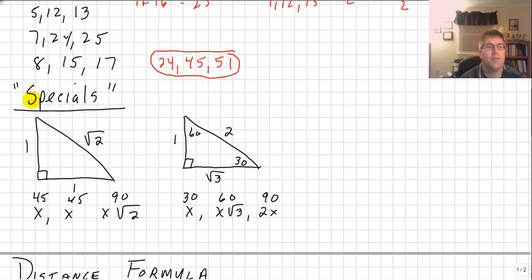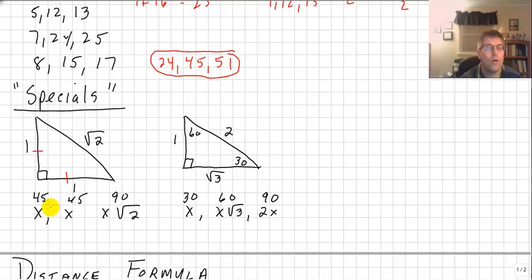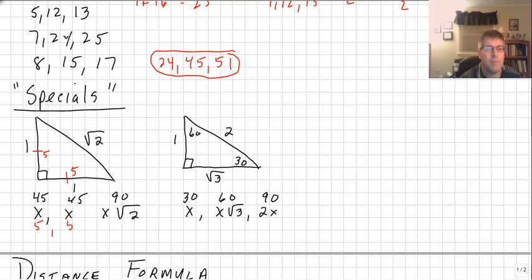We'll also see some special right triangles that are families but not integers. One family is the 45-45-90, or the isosceles right triangle, in which the legs are congruent. If the legs are both 1, the hypotenuse is the square root of 2, giving us x, x, x radical 2. So if one leg is 5 and the other leg is 5, the hypotenuse would be 5 radical 2.